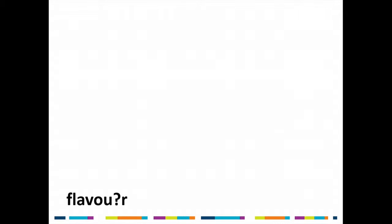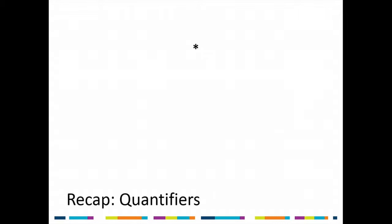Another thing: the question mark. Most of you have probably seen this before — it's the optional quantifier. It says that something is optional, so 'flavou?r' means the 'u' may or may not be there. Quick recap on quantifiers: star is zero or more, plus is one or more, question mark is zero or one (optional). Curly braces with one number specify an exact count, or two numbers for a minimum and maximum range.